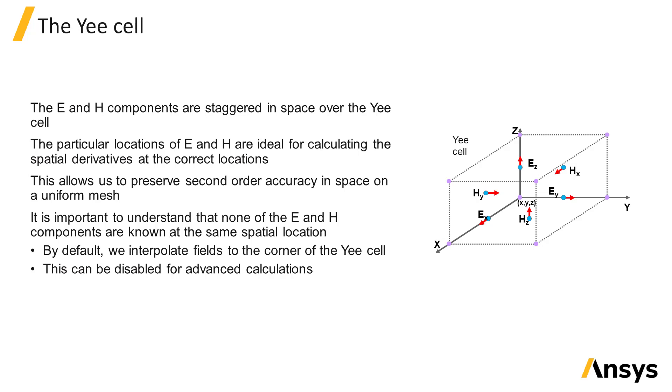Still, it is important to understand that the E and H components are never known at the same spatial location, which can have consequences for many types of results which we may wish to calculate, such as energy density. By default, monitors that record these fields will automatically interpolate all field components to the corner of the Yee cell, so that you can visualize and analyze your results at the same spatial location.